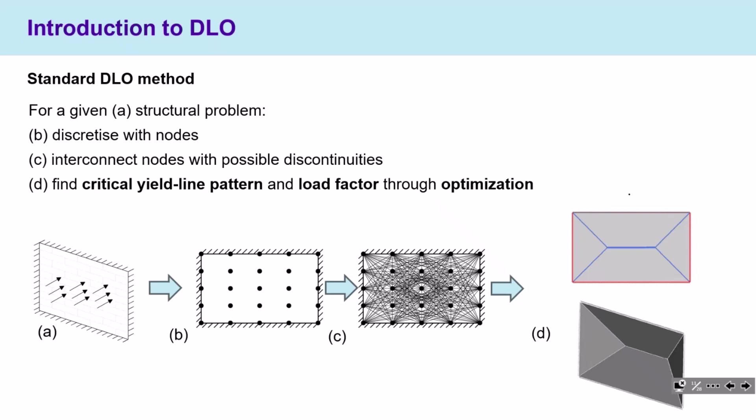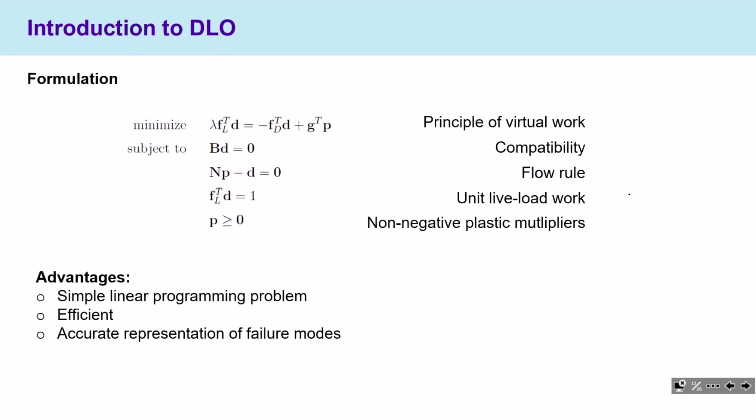In the standard DLO scheme, first we discretize the problem by defining some nodes, then interconnect the nodes identifying a layout of possible discontinuities, each representing a potential failure line or yield line. By solving a simple optimization problem, we can identify the critical yield line pattern and the load factor associated. This is a simple linear programming problem obtained by applying the principle of virtual work under the constraints of compatibility, flow rule, unitary live load work, and non-negative plastic multipliers.